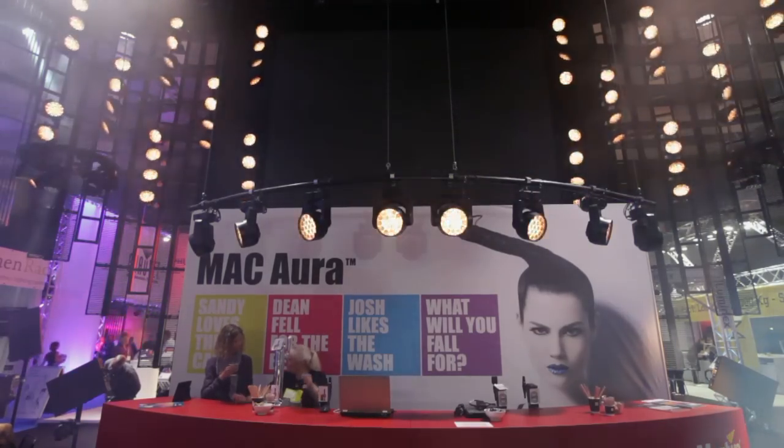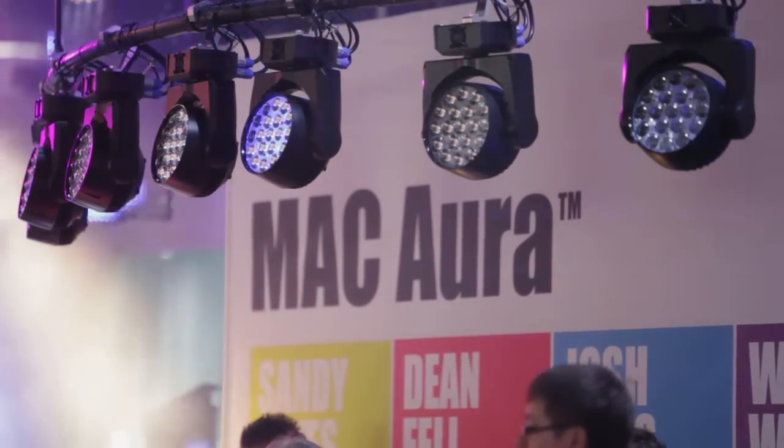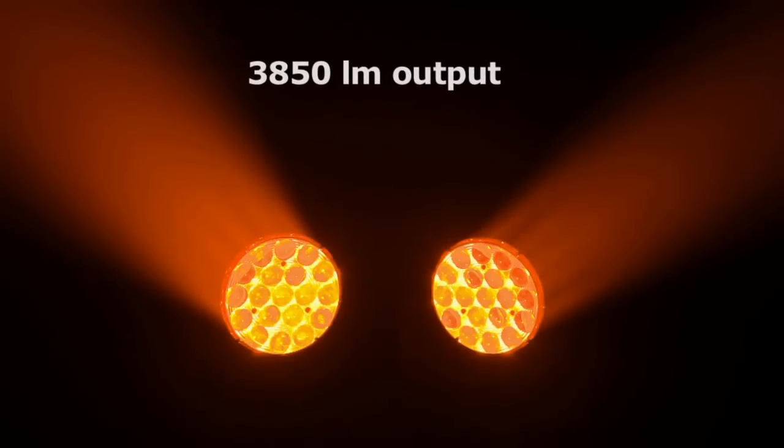First of all, when we started to design the Mac Aura, what we wanted to achieve was to take all the benefits of LED lights we have today but remove all the disadvantages. We wanted to create a light that looks like a real wash light. That means if you have a fixture doing an orange beam, we want to see a lens which is circular and which has the same color as the orange beam.